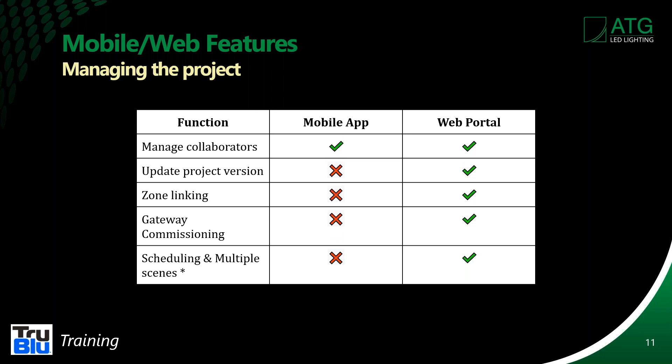There are a lot of things that can be done on the portal that can't be done on the app. On the app you can manage collaborators, but things like updating a project version, zone linking, and gateway commissioning can only be done on the portal. The gateway is required to transmit information over the internet, so you'll need a gateway for any remote monitoring or data mining. On the web portal you can do scheduling and set up multiple scenes.